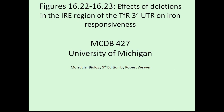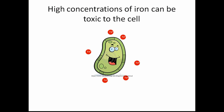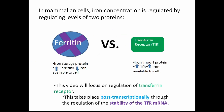Before we go over the figure, let's discuss the background of the paper. While cells need iron to perform a variety of functions, high concentrations of iron can be toxic to the cell. So mammalian cells regulate iron concentration by regulating amounts of two proteins: one, an iron storage protein called ferritin, and an iron import protein called the transferrin receptor, or TFR.